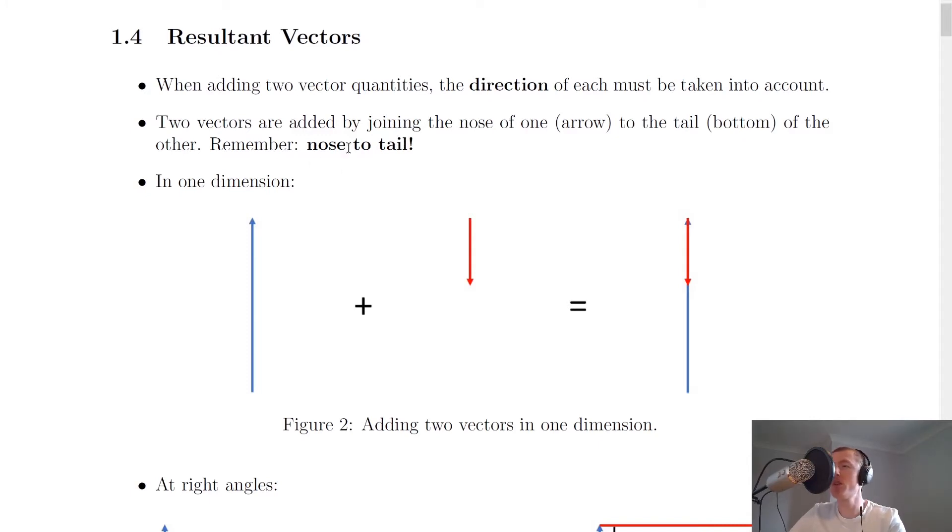Now instead of using the word nose, you might have used the word head before or arrow, and instead of tail, you might just say the bottom of the vector instead.